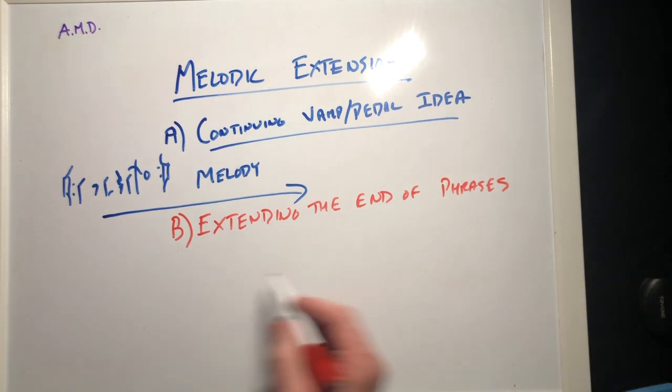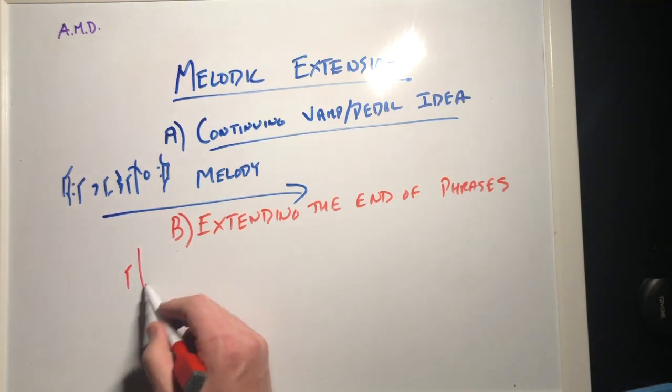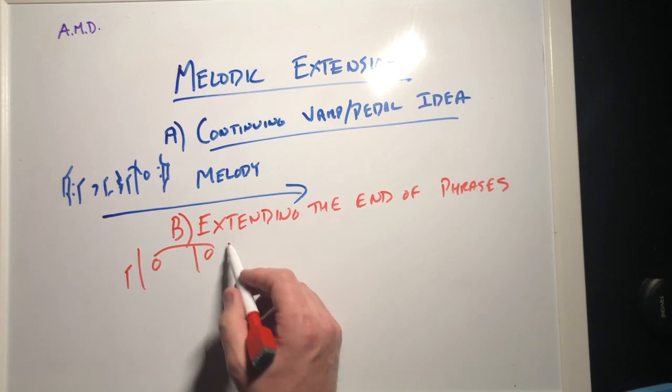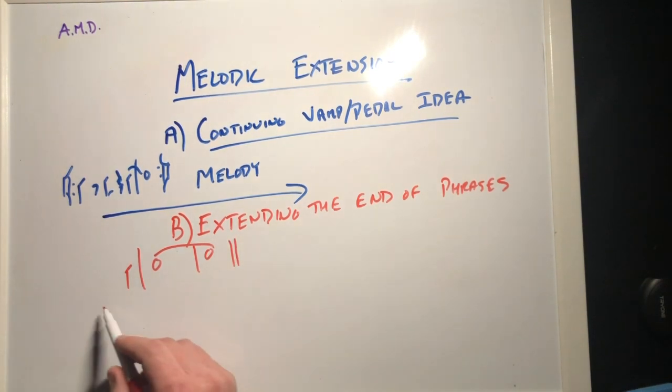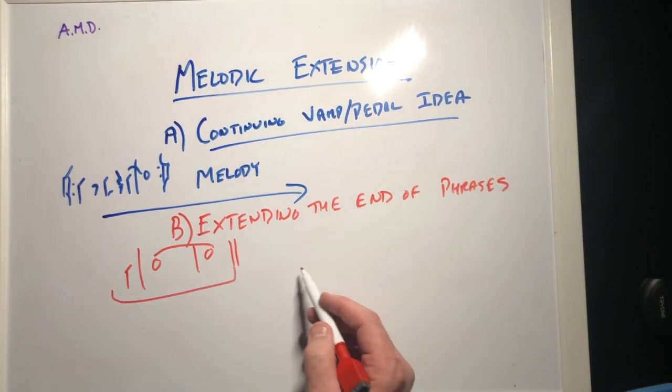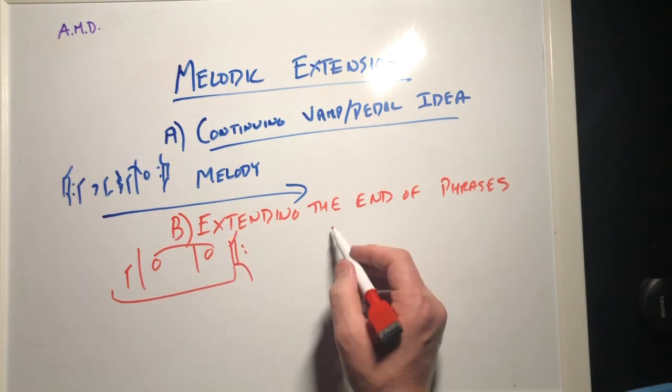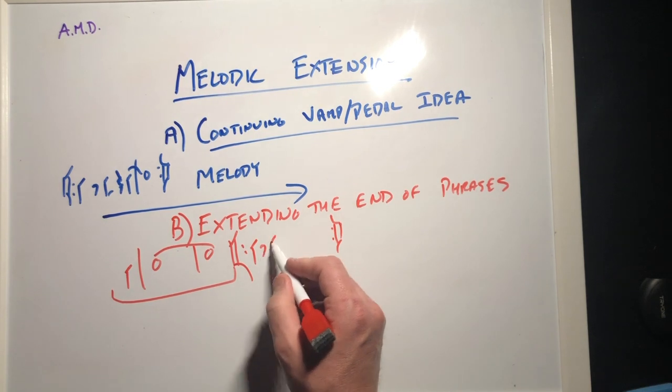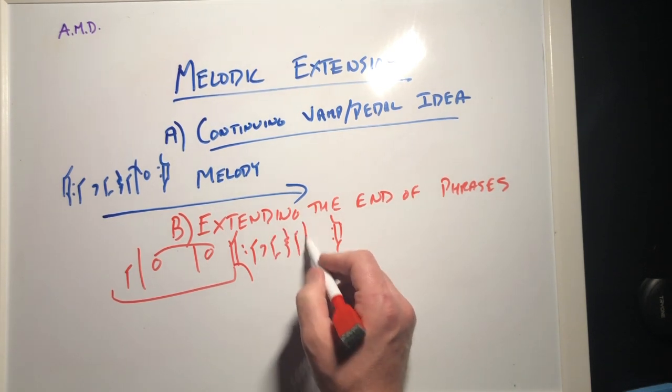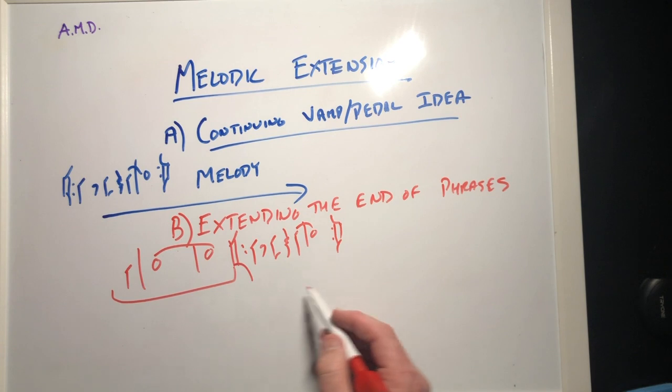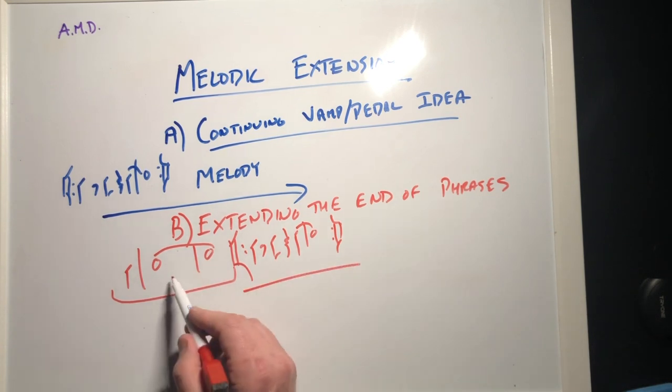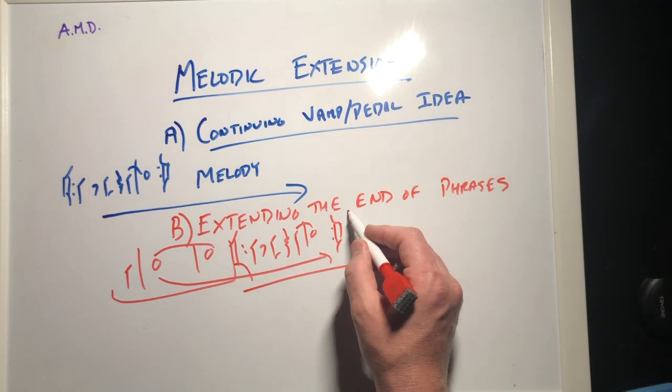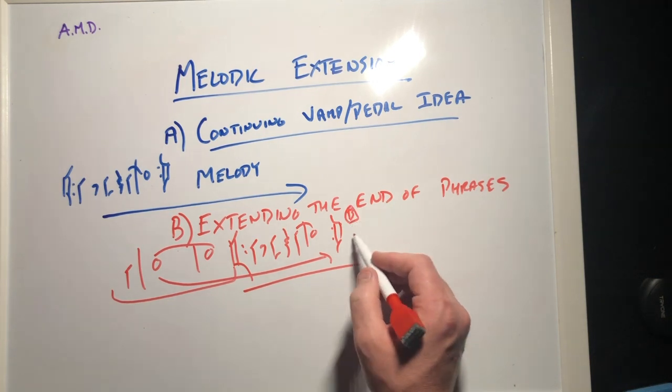It's very possible to extend that out to many additional bars, maybe it's four bars maybe it's eight bars, and then creating some type of vamp or pedal that happens underneath it. Again I think if you think of Coltrane's My Favorite Things might be one example where we hear this idea utilized. There's probably numerous examples of there being a vamp or some type of tag section at the end of a tune that sort of extends out the melody.